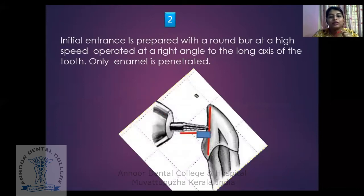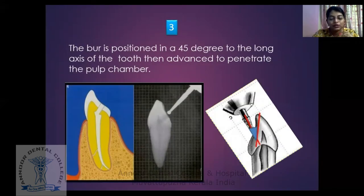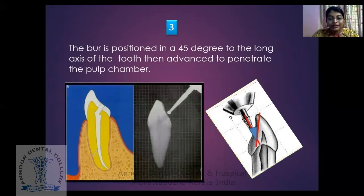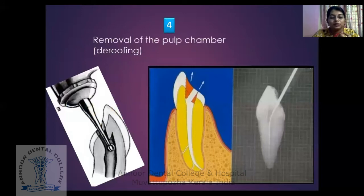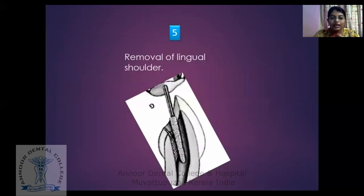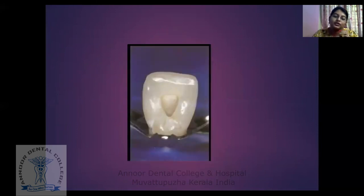The initial entrance is prepared with a round burr at high speed, operated at a right angle to the long axis of the tooth — initially just entering into the enamel. Then the burr is tilted to 45 degrees and directed along the long axis of the tooth. Once you enter the pulp chamber, you get a feel of a dip, because the pulp chamber is soft. Then the de-roofing of the pulp chamber has to be done to get enough space for the irrigant and instrumentation. The lingual shoulders must also be removed. This gives the final preparation in case of central and lateral incisors.